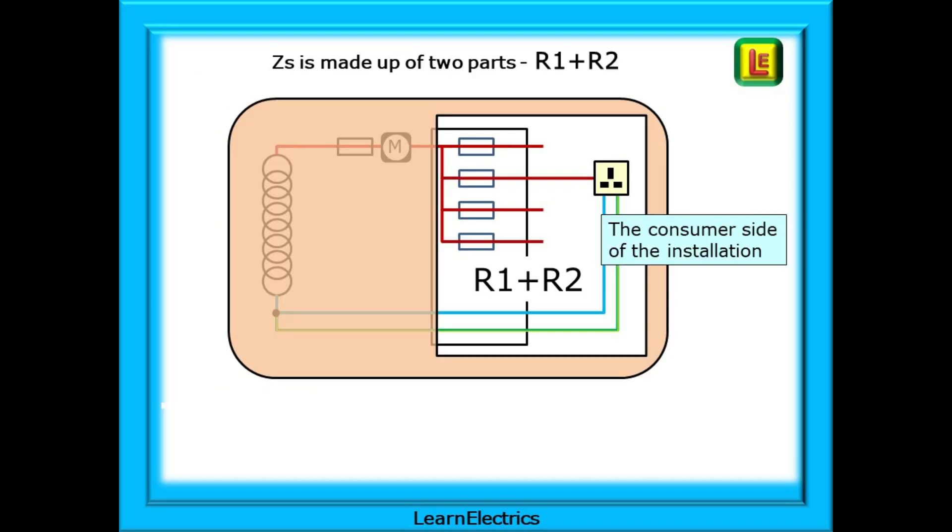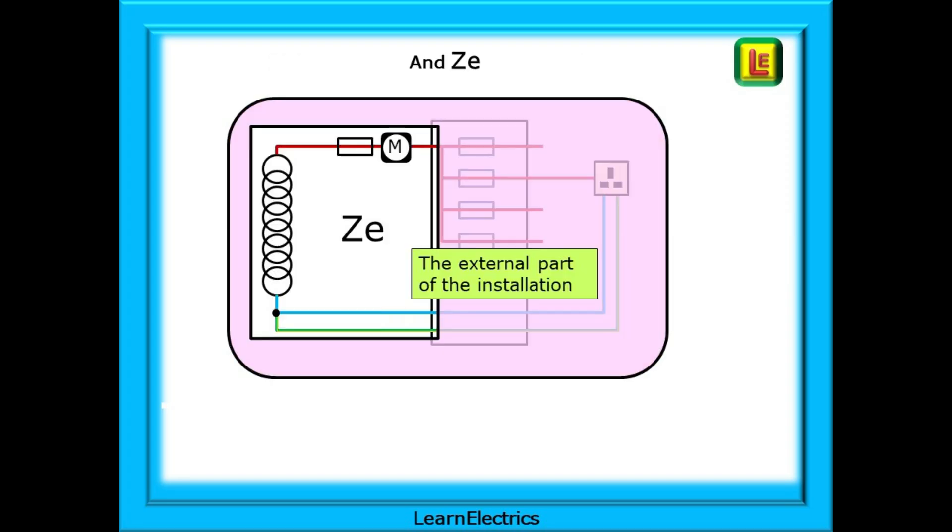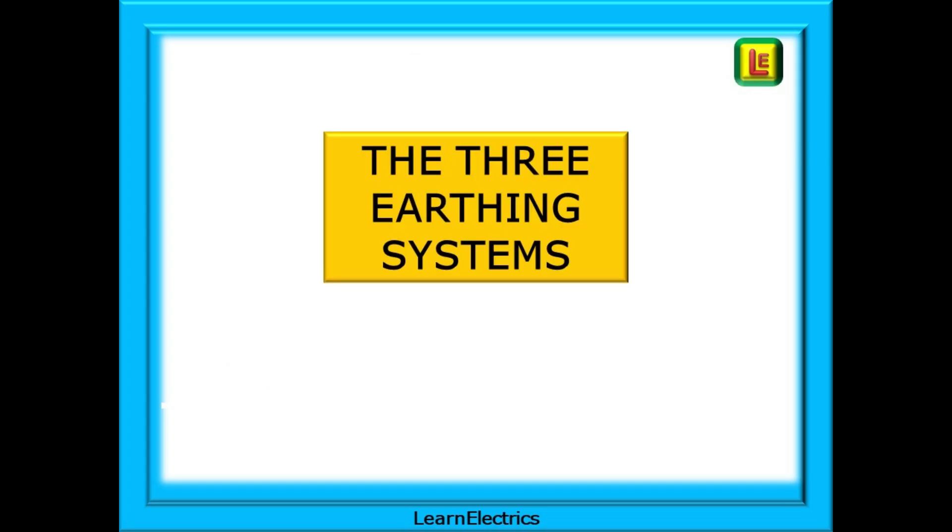ZS, the whole system, the whole circuit, is made up of two parts. The consumer side of the installation, inside the building, from the consumer unit to the points of use. And this is called R1 plus R2. And ZE is the external part of the installation, from the consumer unit all the way back to the supply transformer. Think of ZE, E, as being E for external. So what are the three common earthing systems?